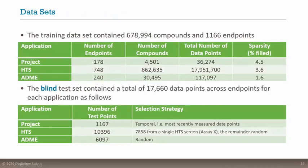Breaking down the data: for the project data there were around 200 endpoints and 4,500 compounds, giving about 36,000 data points — but that's only 4.5% of the full matrix of compound–endpoint pairs. So 95% of the data had not been measured; it was missing. This makes Alchemite, with its ability to handle very sparse data, a great tool to apply to this type of dataset.